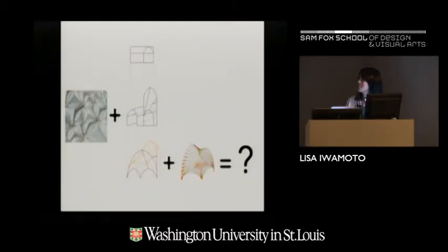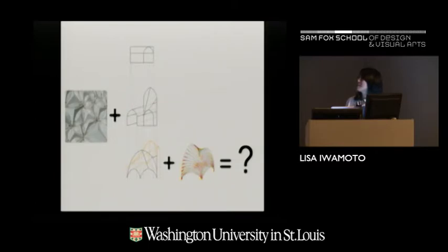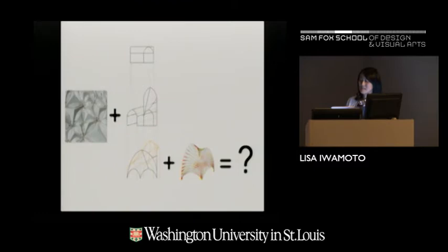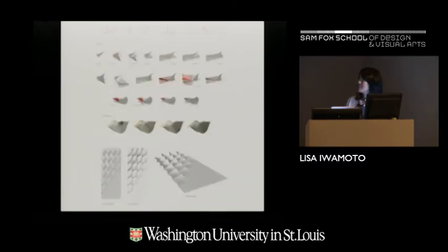I want to start by talking about student work because it's pedagogically more clearly defined. The question I pose to students is: what happens when you take a structural typology — which is of course based on geometry — that becomes deformed for architectural desires, program, and other things we care about, and that merges with a material system? How can these two things be synthesized together?